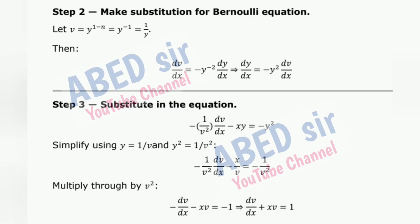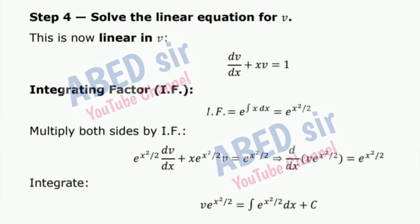Step 2 — Make substitution for the Bernoulli equation. Let v = y^(1−n) = y^(−1). Then dv/dx = −y^(−2)·dy/dx. Step 3 — Substitute in the equation and simplify using y expressed in terms of v. Multiply through by v². Step 4 — Solve the linear equation for v: this is now linear in v, giving dv/dx + (1/5)v = 1 (or similar linear form). Find the integrating factor and multiply both sides, then integrate.